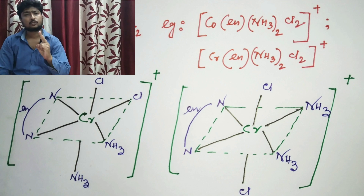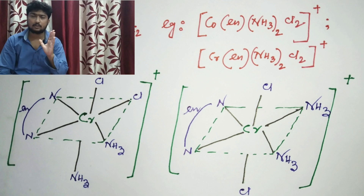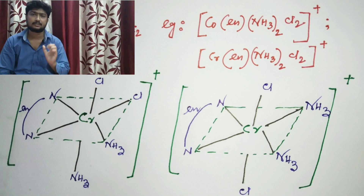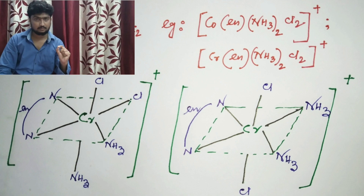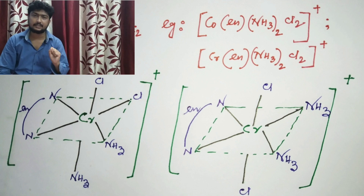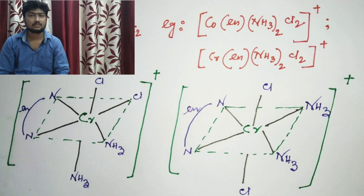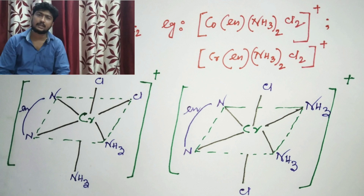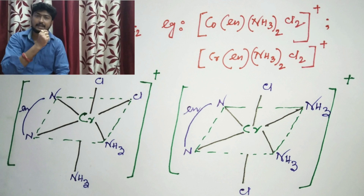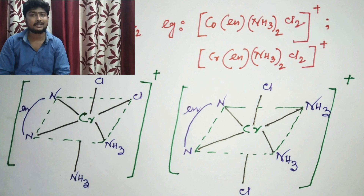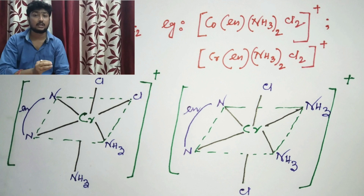This is a six-coordinated compound with two Cl atoms, two NH3 ligands, and one en ligand. If two Cl remain at 90 degrees or two NH3 remain at 90 degrees, then a cis isomer exists. If two Cl atoms remain at 180 degrees or two NH3 ligands remain at 180 degrees, then it is called a trans isomer.